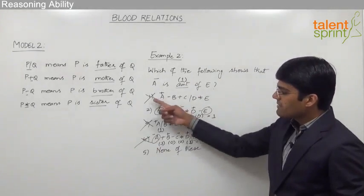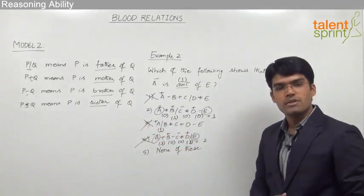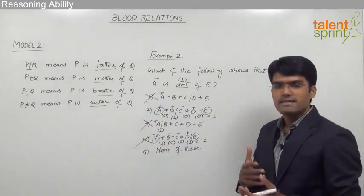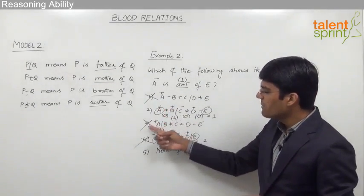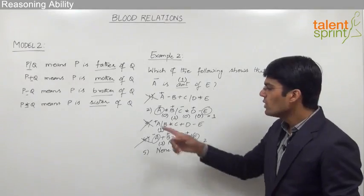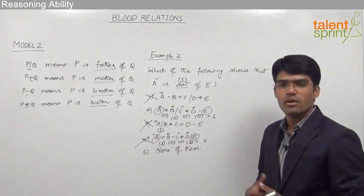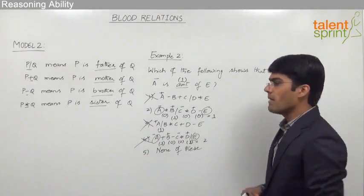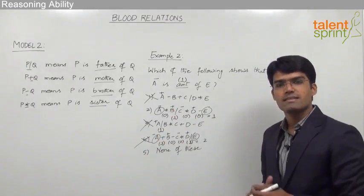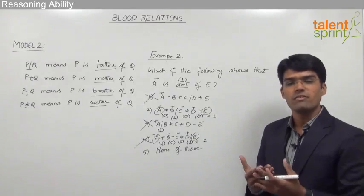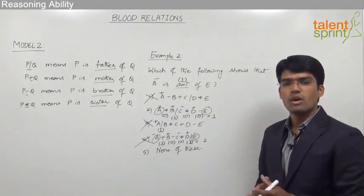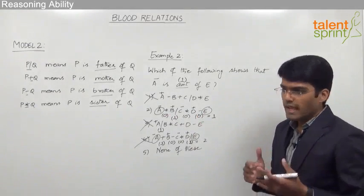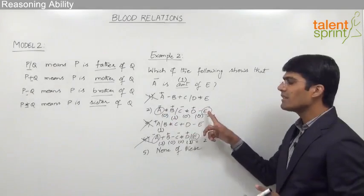Options 1, 3, and 4 have been eliminated. Only option 2 and option 5 are left. If you are running short of time, mark option 2 as the answer and move to the next question. But if you want to verify, you can construct the family tree for equation 2 and check whether A is indeed the aunt of E.